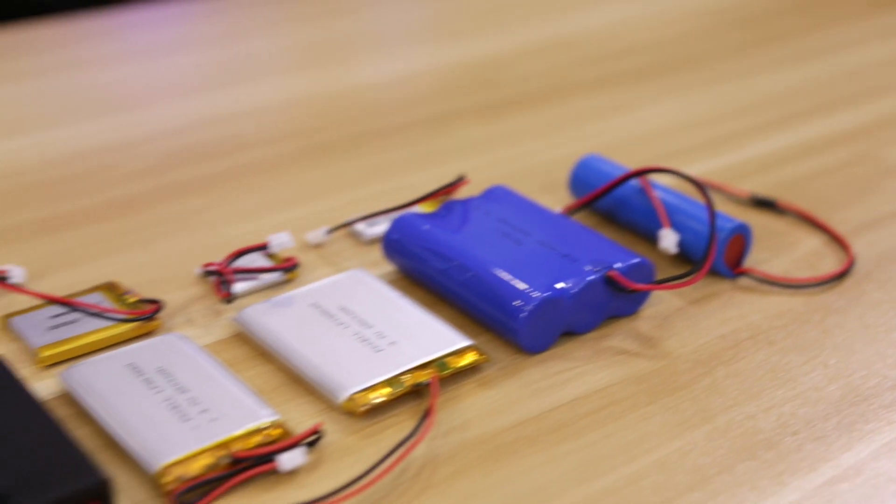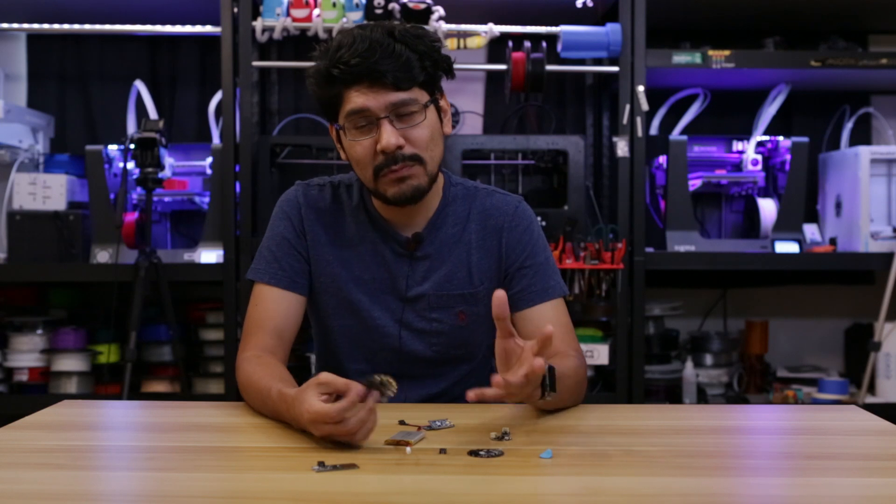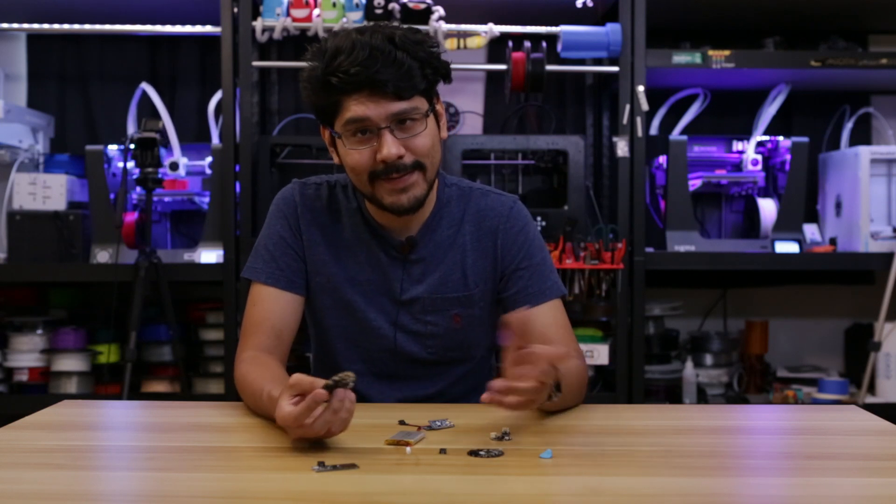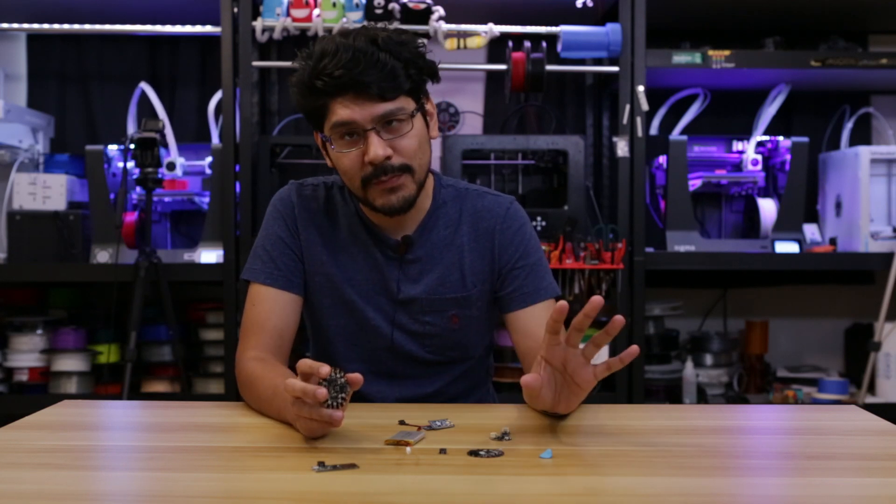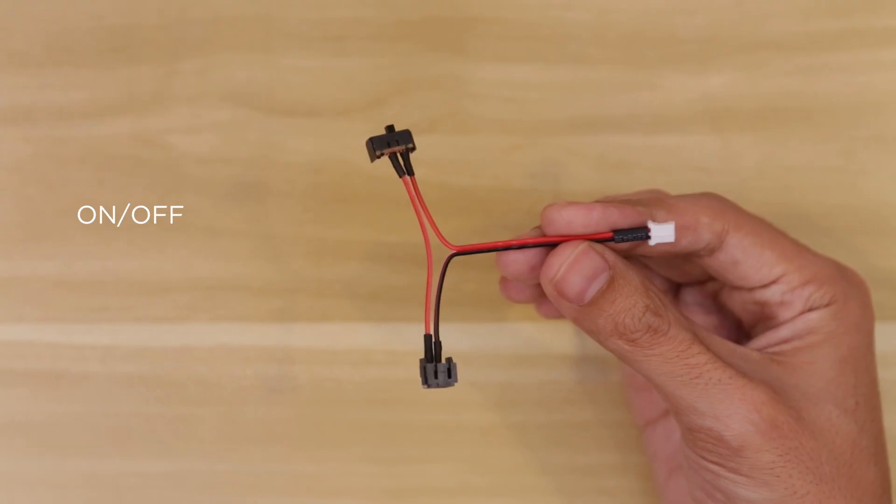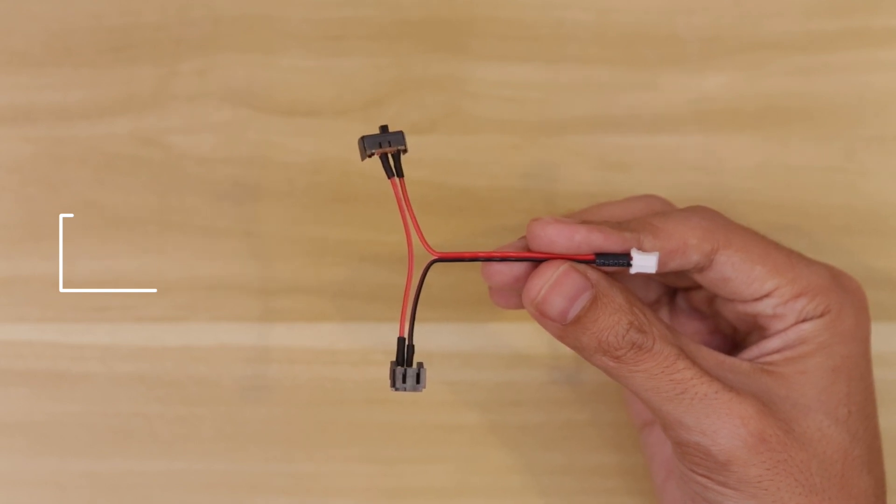For most projects, batteries are probably the best way to make them portable. Being able to turn your project on and off can be really useful, if not important. So it's really important that you don't have to take your project apart just to power it down. And that's when an on and off switch is really handy. Our slide switch JST adapter is basically a way for you to have an on and off switch for your projects.